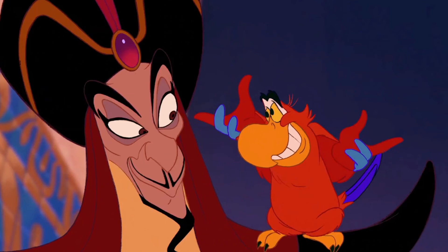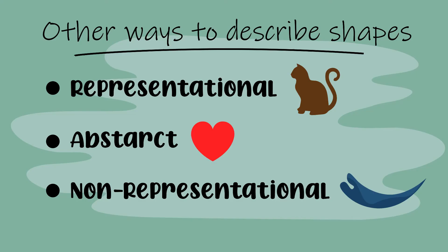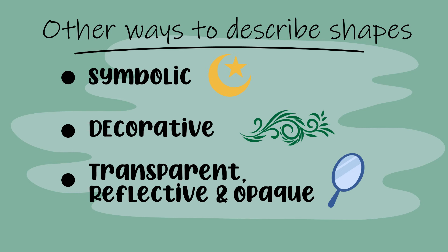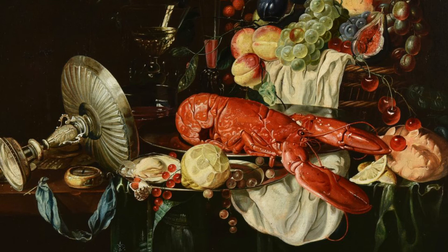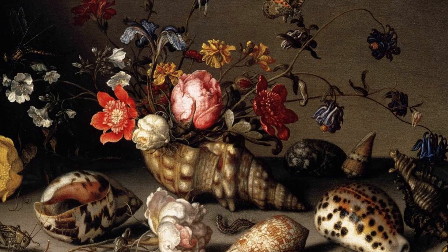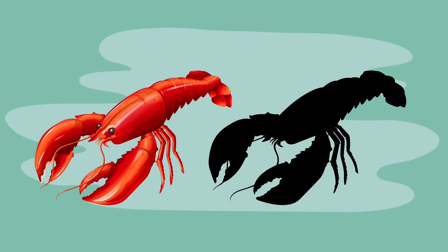There are also other ways to describe shapes in artworks. These include representational shapes, abstract shapes, non-representational shapes, symbolic shapes, decorative shapes, and transparent, reflective and opaque shapes. Representational shapes reproduce what we see in the real world. They are drawn with visual accuracy and are easily recognizable — the shape of the shell looks like a shell and the shape of the lobster looks like a lobster.